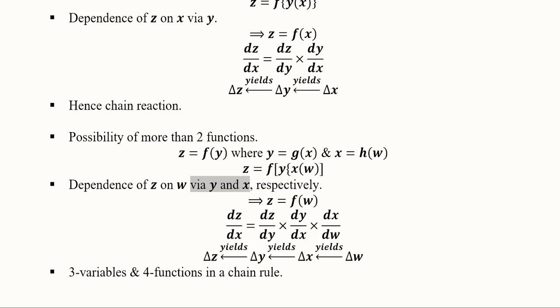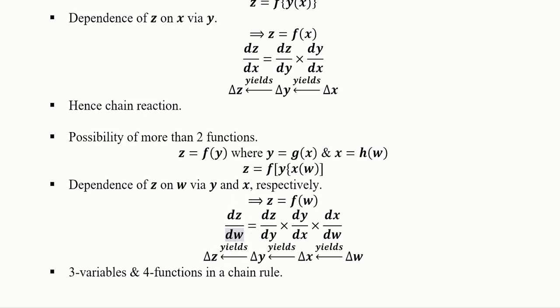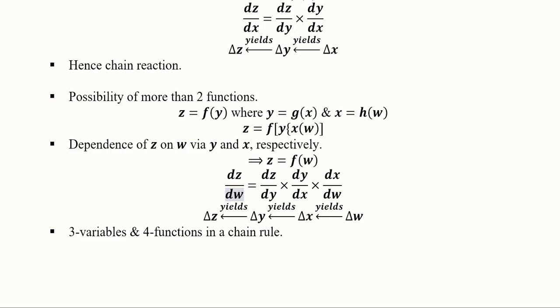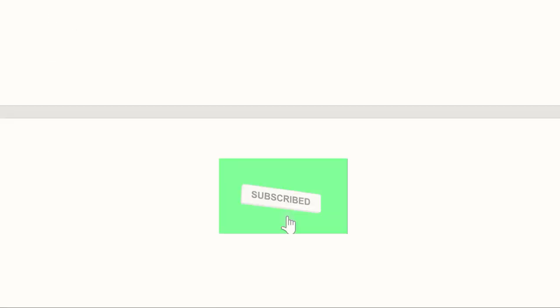These auxiliary variables perform a helping role in developing the relationship between w and z. To express this: w affects x, x affects y, and y affects z. Multiplying these terms to create a chain, dx and dy cancel out, leaving dz over dw. This shows that a change in w causes a change in x, which causes a change in y, which causes a change in z.